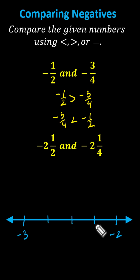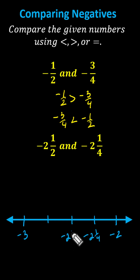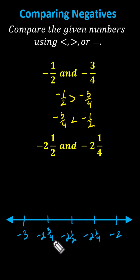Now we can count by one-fourths from negative two to negative three. We have negative two and one-fourth, negative two and two-fourths — which simplifies to negative two and one-half — then negative two and three-fourths, and then negative three. Now let's plot the two values: negative two-and-a-half and negative two-and-one-fourth.